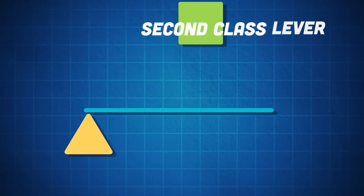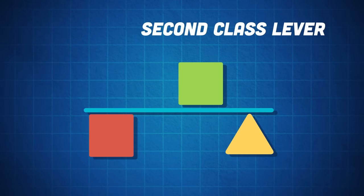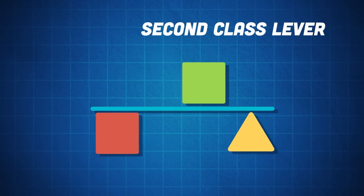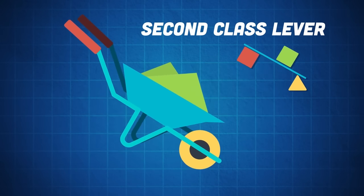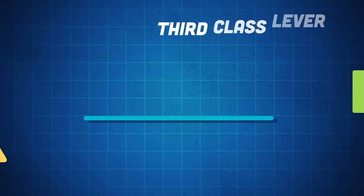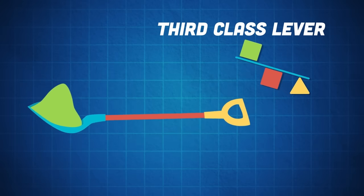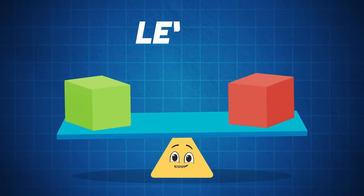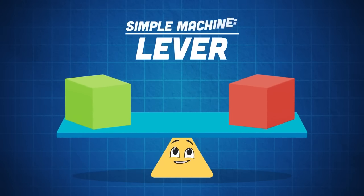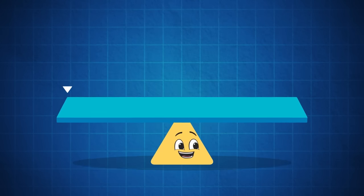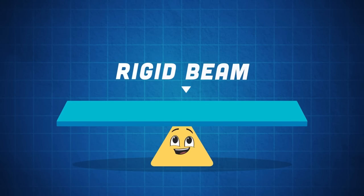The second class lever's load is located between the effort and fulcrum. The closer the fulcrum is to the load, the less effort is needed. The third class lever's effort is located between the load and the fulcrum. If the fulcrum is closer to the load, then less effort is needed to move it. This is a lever — a simple machine made of a fulcrum and a rigid beam.